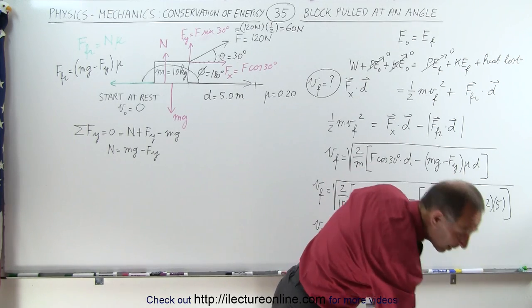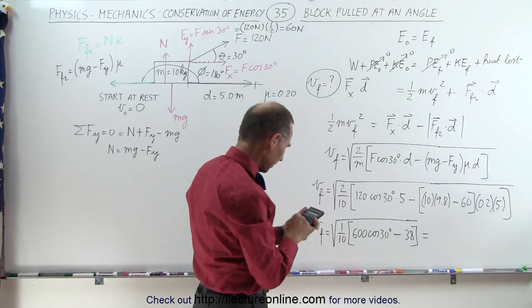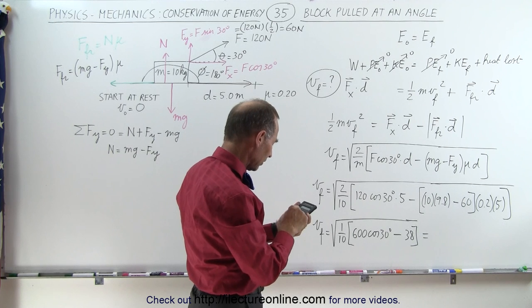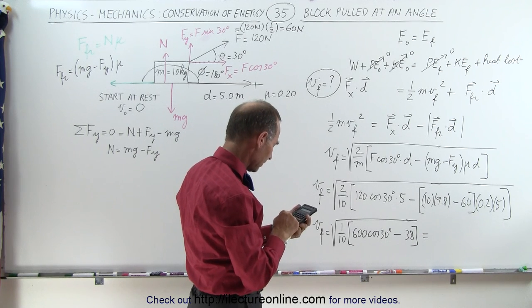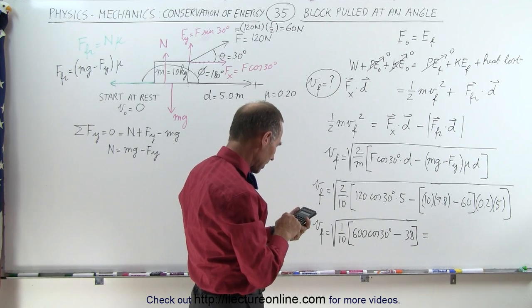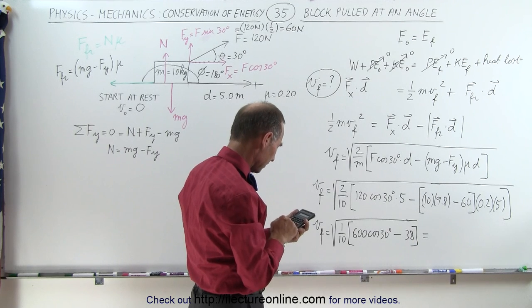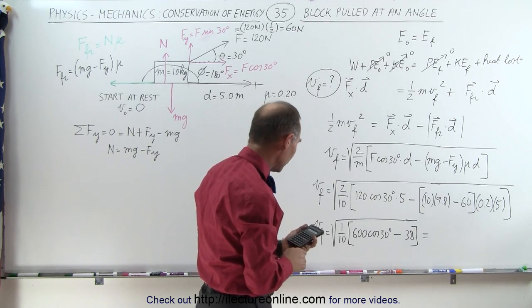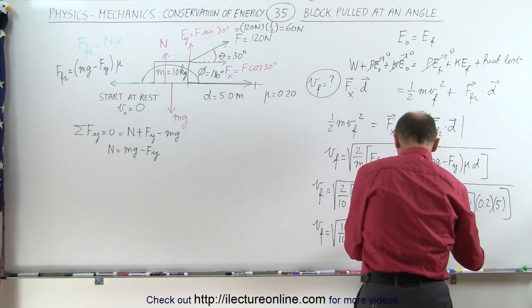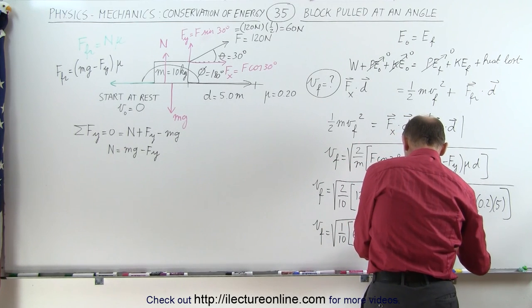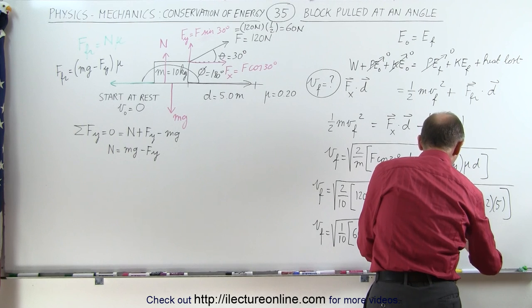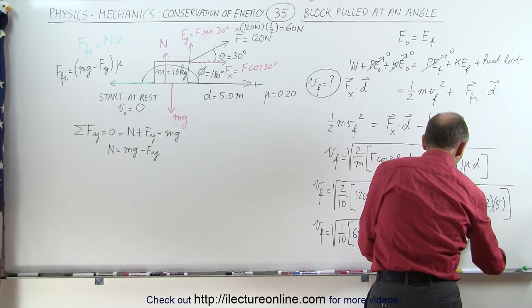Now we calculate: 600 times cosine of 30, minus 38, divided by 10. Taking the square root, v_final equals 6.94 meters per second.